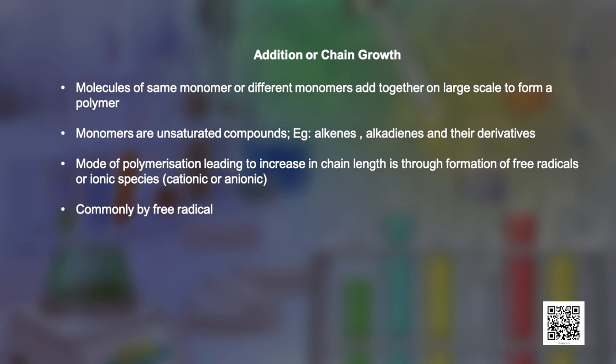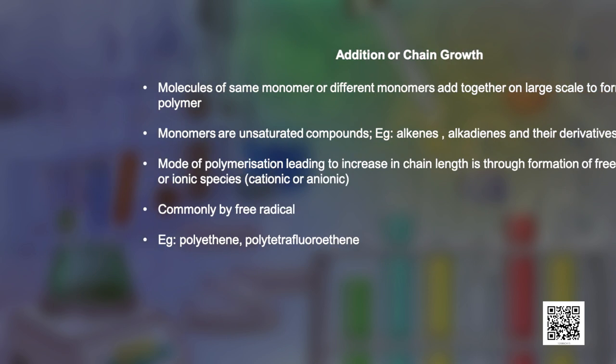However, the free radical governed addition or chain growth polymerization is the most common mode. In this session, we will focus on free radical mechanism only. The common examples of such polymers are polythene and polytetrafluoroethene, also known as teflon.